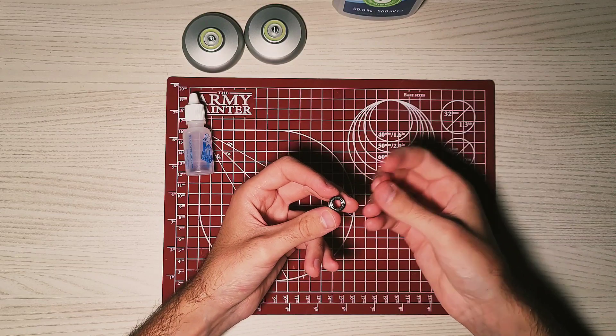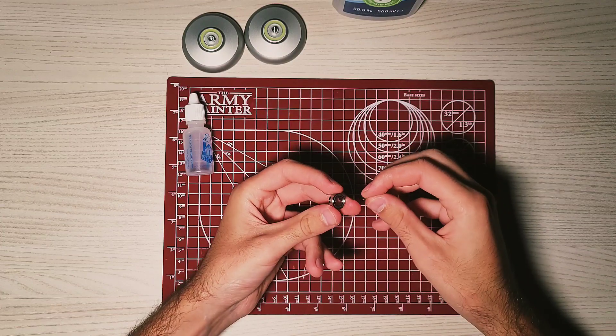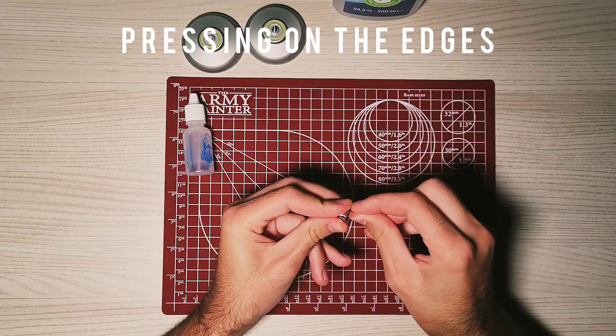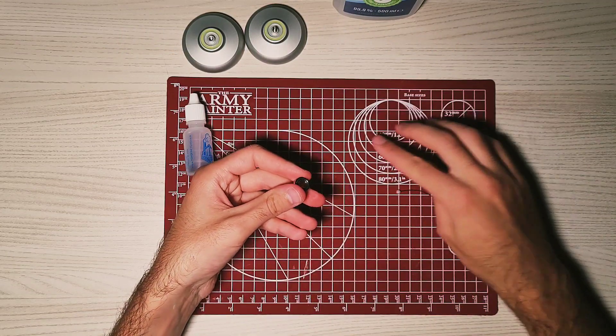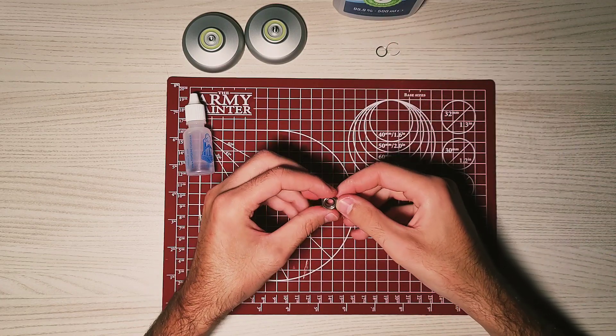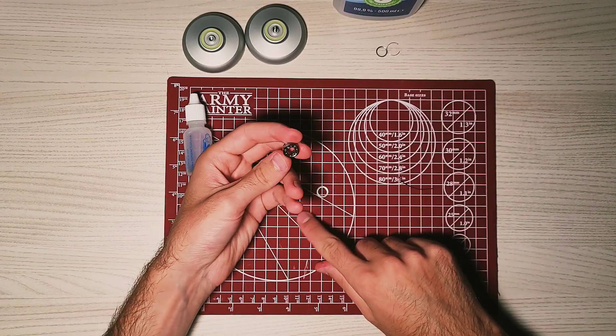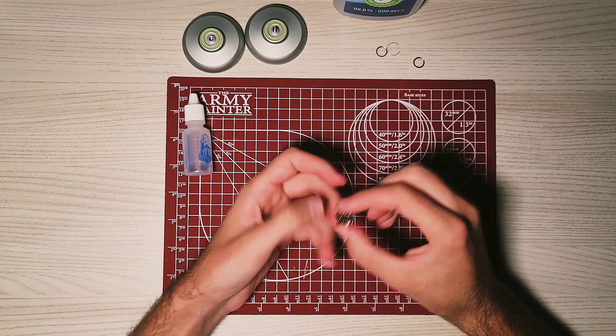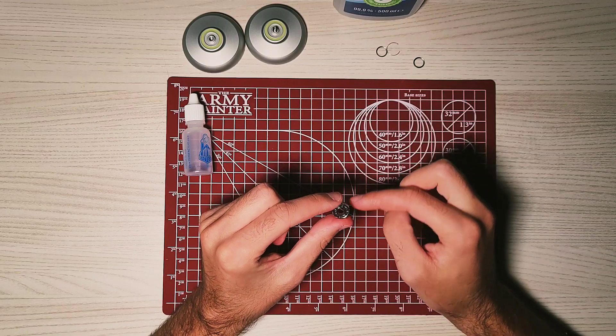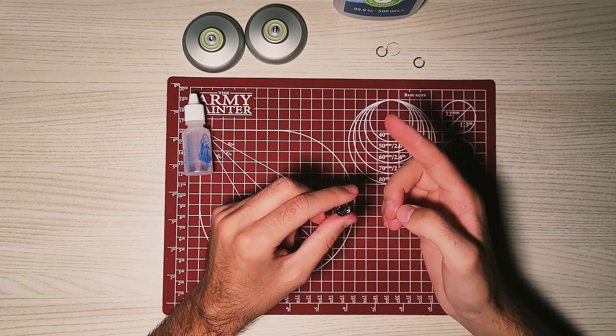What you're going to do with the needle is try to remove this ring from the bearing. There we go, one is gone. Now remove the shield from the other side. The shield is out, so now you can see all the balls of the bearing.